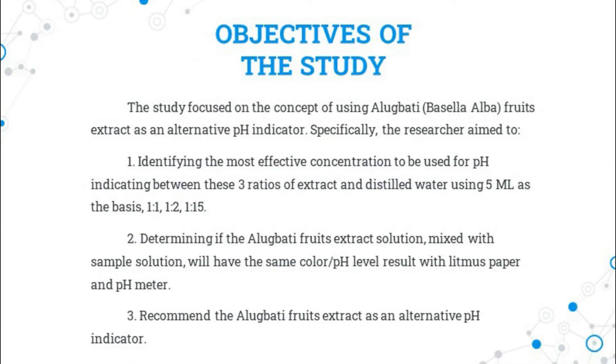The study focused on the concept of using alugbati or Basella alba fruit extract as an alternative pH indicator. Specifically, the researchers aimed to: 1. Identify the most effective concentration to be used for pH indicating among three ratios of extract and distilled water using 5 ml as the basis — 1:1, 1:2, and 1:15. 2. Determine whether the alugbati fruit extract solution mixed with sample solution will have the same color or pH level result as litmus paper and pH meter. 3. Recommend the alugbati fruit extract as an alternative pH indicator.